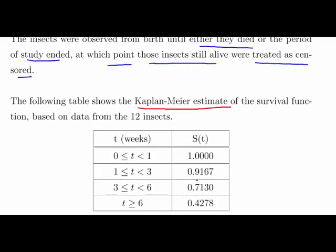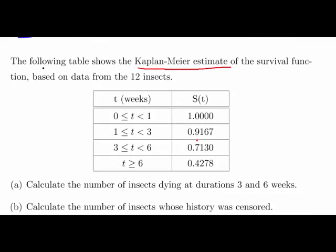Let's look at the table here. The following table shows the Kaplan-Meier estimate of the survival function based on the first 12 weeks. We have a couple of time periods: the first corresponds to the first week, between 0 and 1; the second corresponds to between the first and third week; the third corresponds to between weeks 3 and 6; and the fourth corresponds to what happens after 6 weeks.